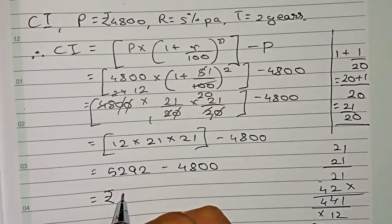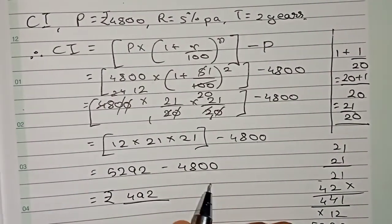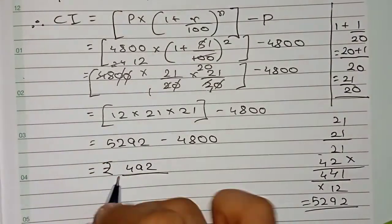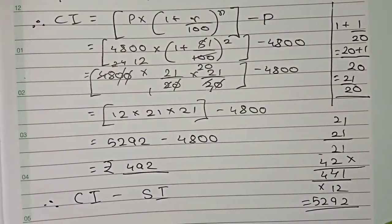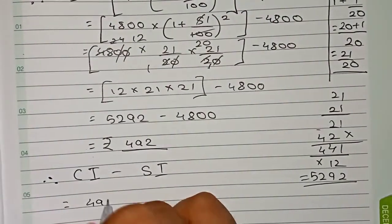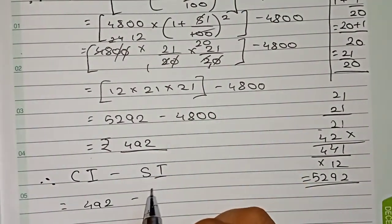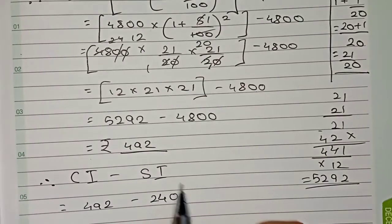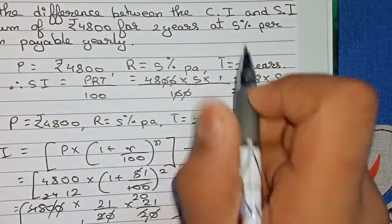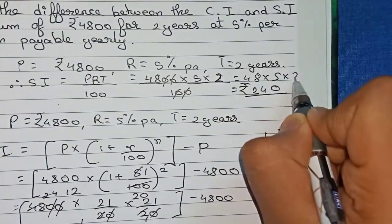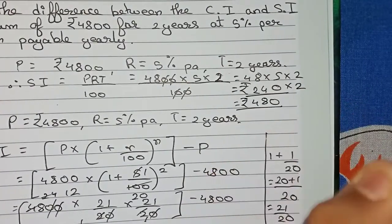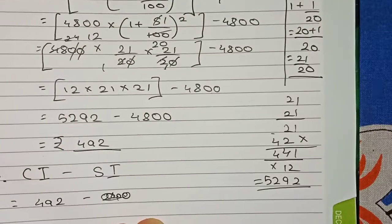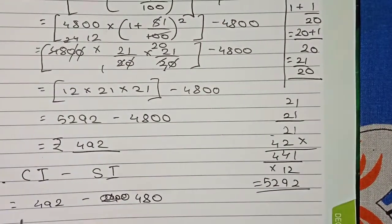So the compound interest is rupees four hundred ninety-two. Now, CI minus SI: compound interest is four hundred ninety-two. For the simple interest, I need to correct — the time is two years, so four thousand eight hundred into five into two by hundred, which gives four hundred eighty. So the simple interest is rupees four hundred eighty.